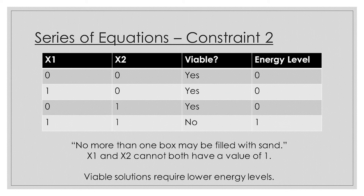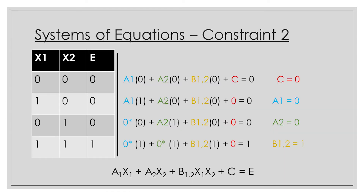Our next step is to translate our other constraint into a QUBO equation: no more than one box can be filled in with sand, as we have exactly enough sand to fill in one box and one box alone. In this case, we get our system of equations ready and set our energy levels. Only the last case does not satisfy our condition, as we don't have enough sand to completely fill in both box 1 and box 2, so its energy level is set to 1. The rest of the equations satisfy our condition, as either one of the boxes is filled in, or none of the boxes are filled in at all.